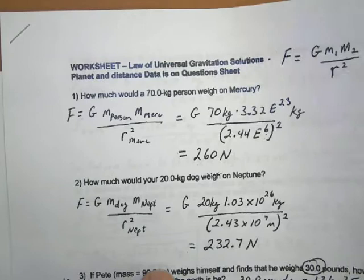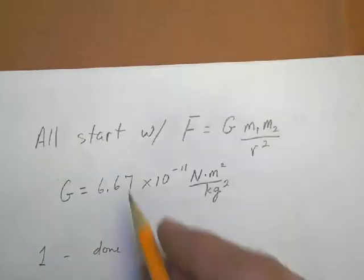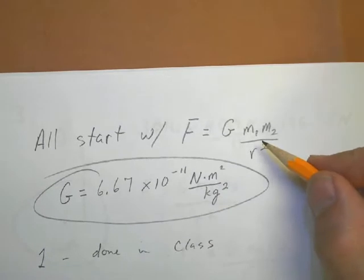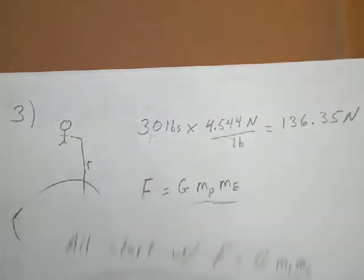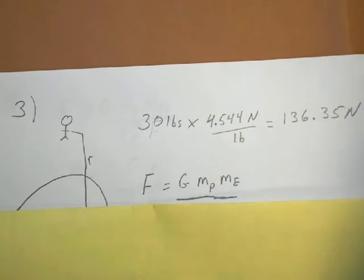So again, for all these remember, always this number, and you're always using some form of this equation. Now, number three, where you are asked if Pete, with a mass of 90 kilograms, weighs himself, and he finds that he weighs 30 pounds, how far from the surface of the earth is he?